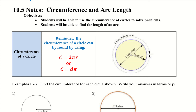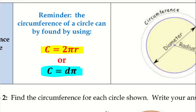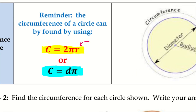To find the circumference of a circle, you have two different equations you can use. You can use C equals 2πR, or you can use C equals Dπ. R is the radius — we've been working with the area formula πR squared, so this is different.